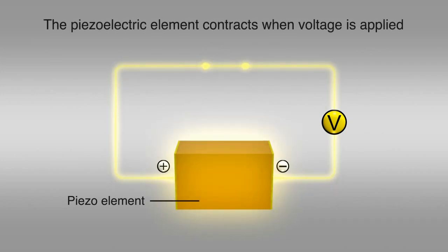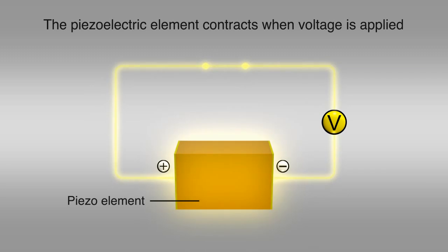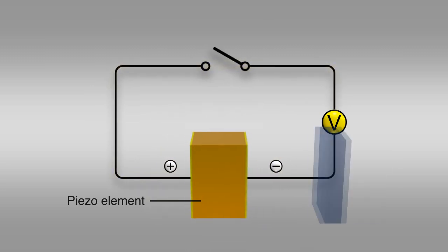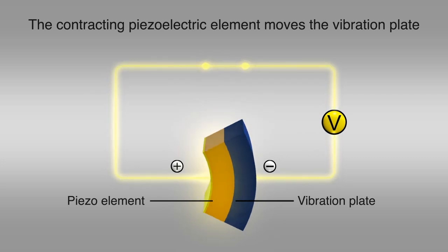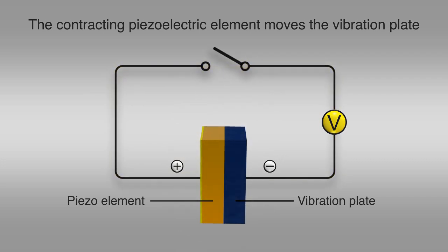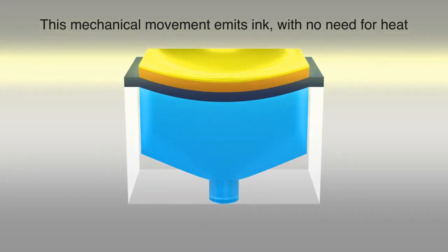When voltage is applied to a piezoelectric element, it contracts. A piezoelectric element and a vibration plate form a set. The contracting piezoelectric element moves the vibration plate to generate an inkjet mechanically with no need for heating.